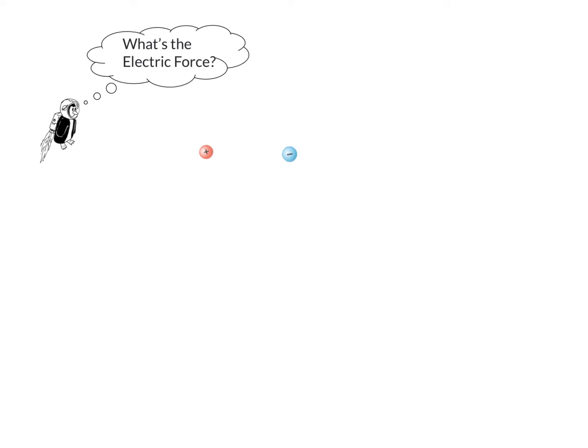The evidence for why there were two types of charges was that sometimes when you charged an object, they would attract each other, and other times they would repulse each other, which leads to the phrase opposites attract and like charges repel.